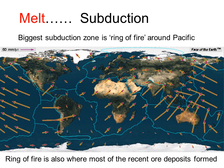The biggest subduction zone is the so-called Ring of Fire around the Pacific Ocean. And it's no coincidence that the Ring of Fire is also where most of the recent ore deposits are formed. Subduction is the dominant way of getting rock to melt.